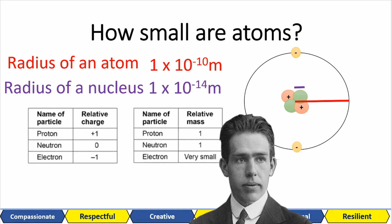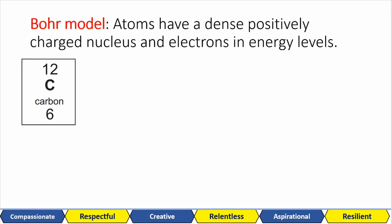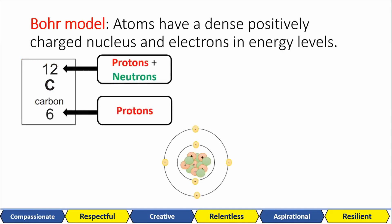This model of the atom is called the Bohr model. This states that the atom has a dense positively charged nucleus and negatively charged electrons in specific energy levels. Just by looking at this information on the periodic table, we can work out the number of protons, neutrons and electrons of the atom. We see that we have 6 protons because the atomic number is 6. The particles in the nucleus total 12, which means by taking the 12 away from the 6, we get 6 neutrons. Since it's an atom with no overall charge, we must have 6 electrons.